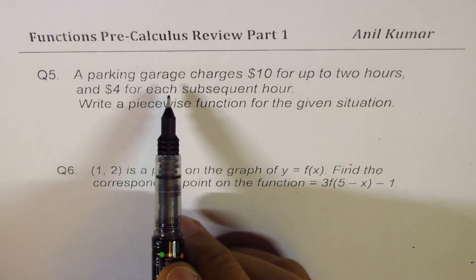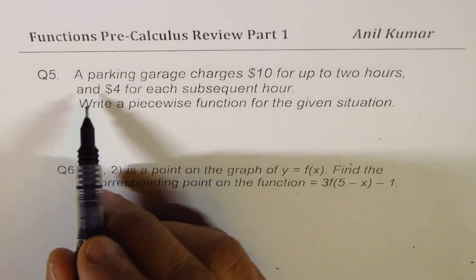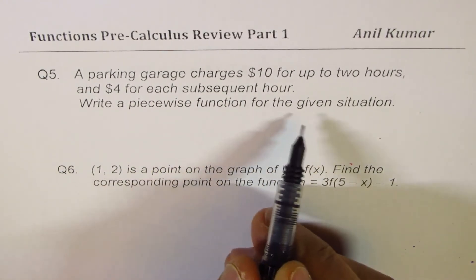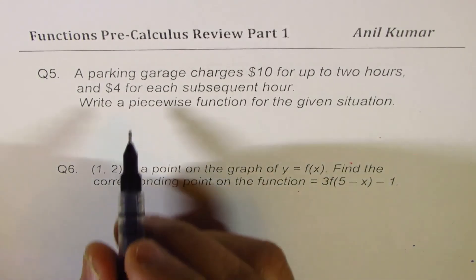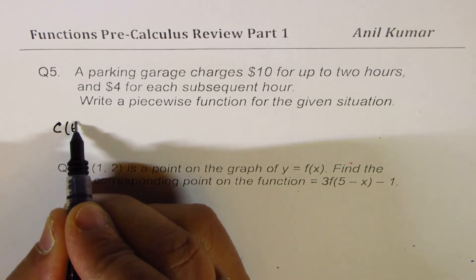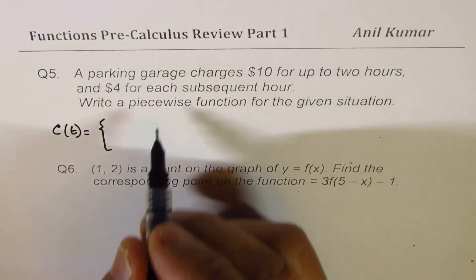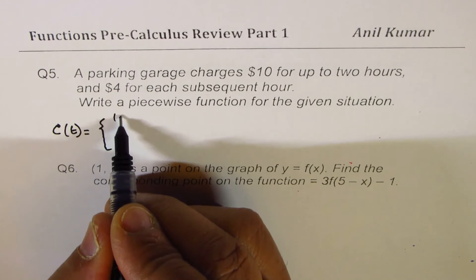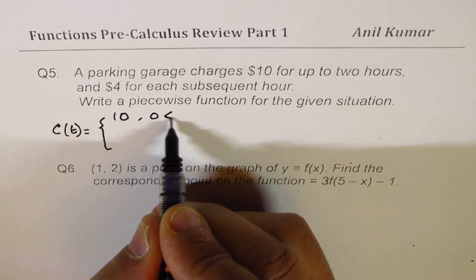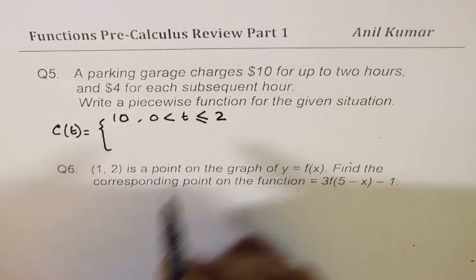Question 5 is a word problem based on piecewise functions. A parking garage charges $10 for up to two hours, and $4 for each subsequent hour. Write a piecewise function for this situation, where cost is a function of time.